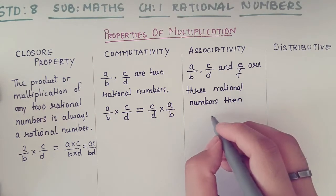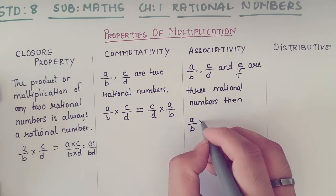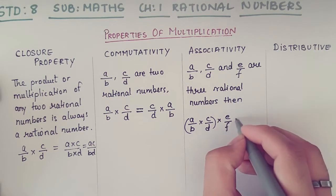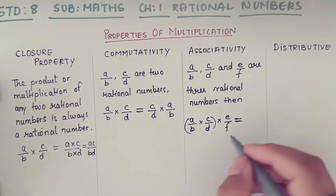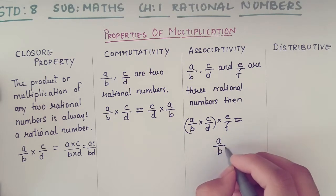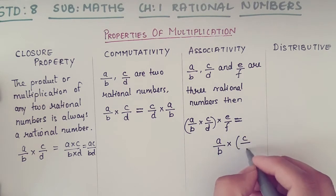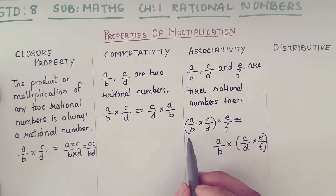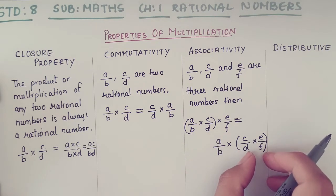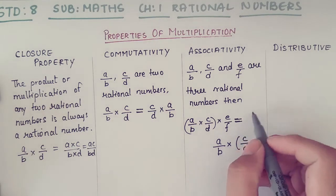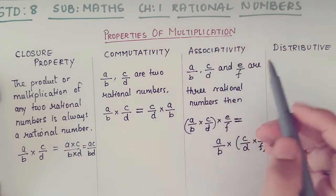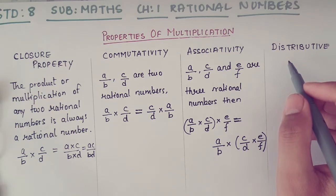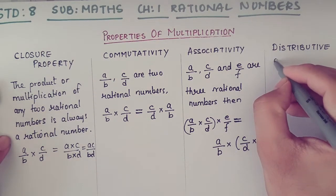For associativity, where a/b, c/d, and e/f are three rational numbers: (a/b × c/d) × e/f equals a/b × (c/d × e/f). On the left-hand side the first two terms are in the bracket, and on the right-hand side the second and third terms are in the bracket — both give the same answer. So associativity under multiplication holds.